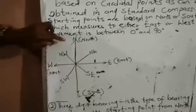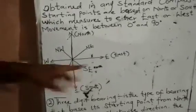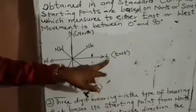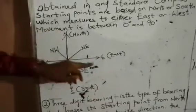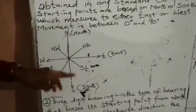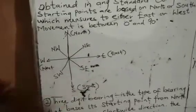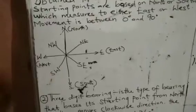We have the north pole, the south pole, the west pole, and the east pole. Here to here is north east. Here to here is south east. Here to here is north west. Here to here is south west.